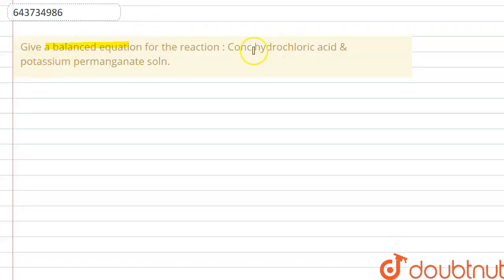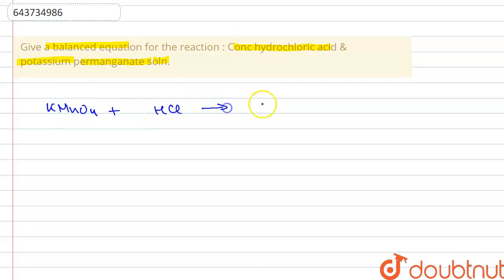Hello everyone. The question is: give a balanced equation for the reaction taking place between concentrated hydrochloric acid and potassium permanganate solution. The reaction is: KMnO4 reacts with HCl to give KCl (potassium chloride) plus MnCl2 (manganese chloride) plus H2O (water) plus chlorine.